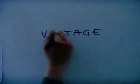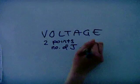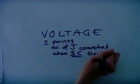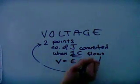Voltage is between two points, and it is the number of joules of energy converted when one coulomb of charge flows between these two points. This can be worked out by voltage equals energy divided by charge.